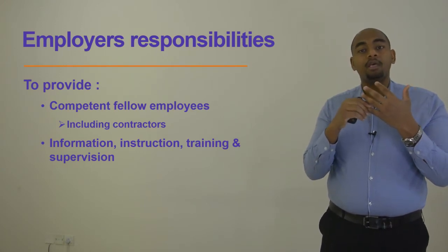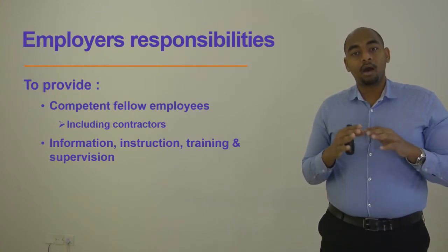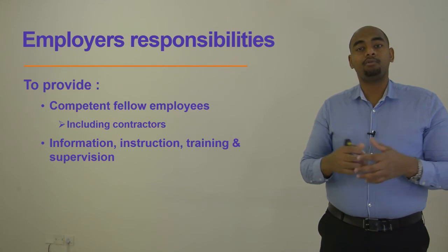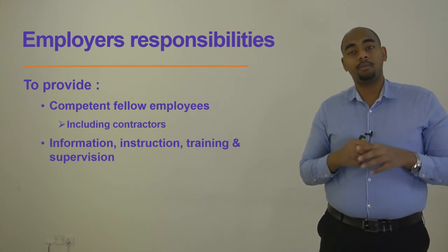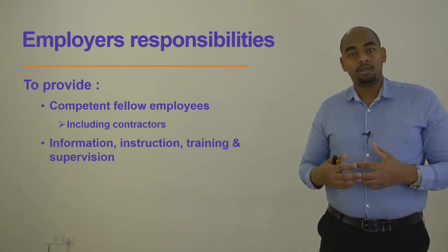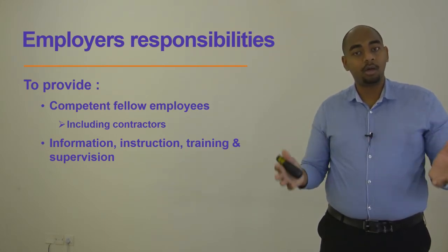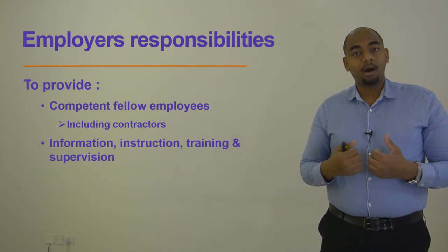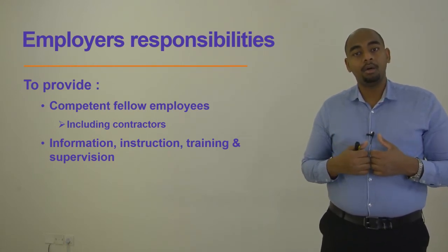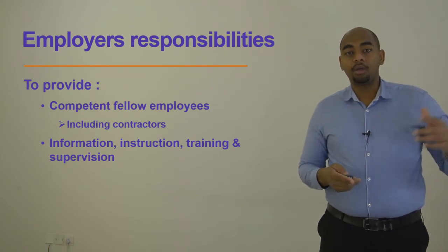Information, instruction, training, and supervision is one of the essential responsibilities of the employer. This means the employer must supervise employees, provide them with training, instruct them properly, and inform them regarding health and safety issues within the workplace, to make sure they are safe and will return home safely. This covers the employer's responsibilities.